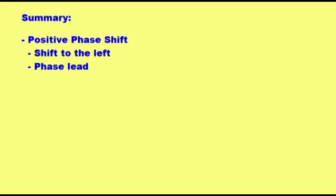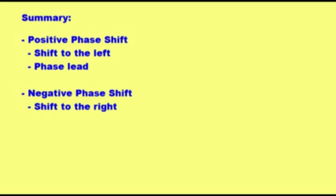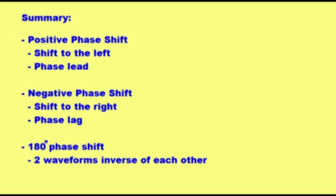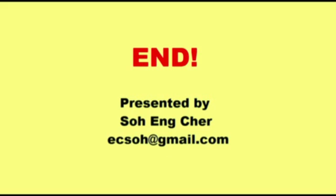To summarize: positive phase shift is a shift to the left, and positive phase shift is phase lead. Negative phase shift is a shift to the right, and negative phase shift is phase lag. The unique case is a 180-degree phase shift, where the two waveforms are the inverse of each other. The procedure to convert the x-axis from radian scale to time scale is at the end of this video. Do not hesitate to email if you have any questions.